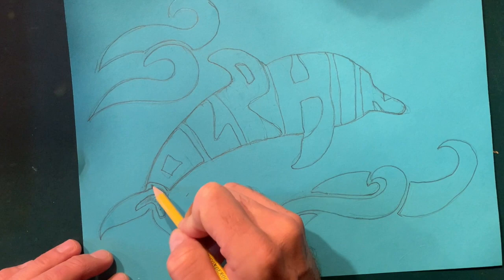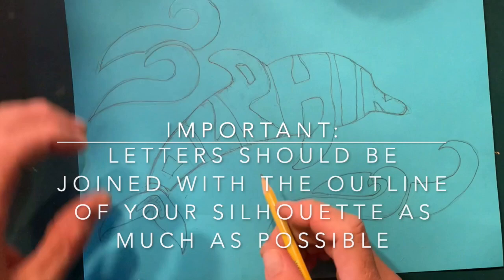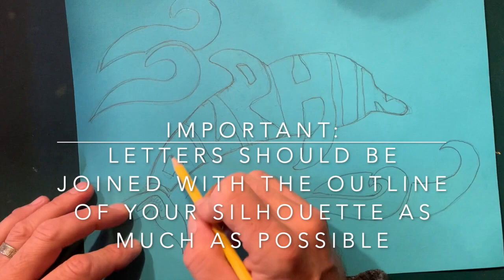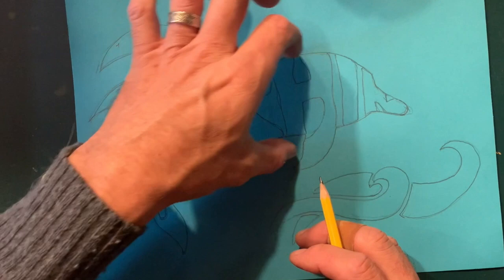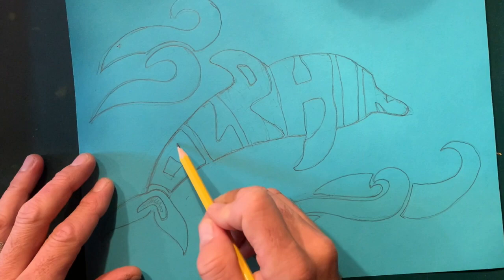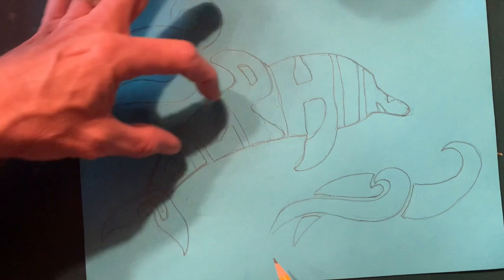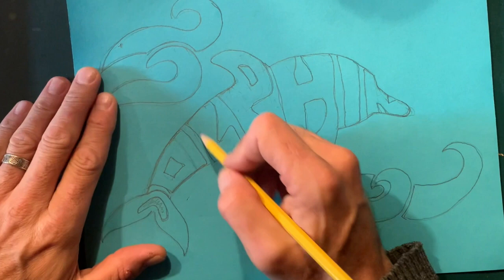For the O, I bent the side around to fit the curve of the D. Importantly, the top and bottom of my O border the dolphin outline — all letters should do that. If they don't, the letters won't define the shape of the object once the outline is removed. I had to play with size; my O was too small at first and I had to erase and make it bigger.